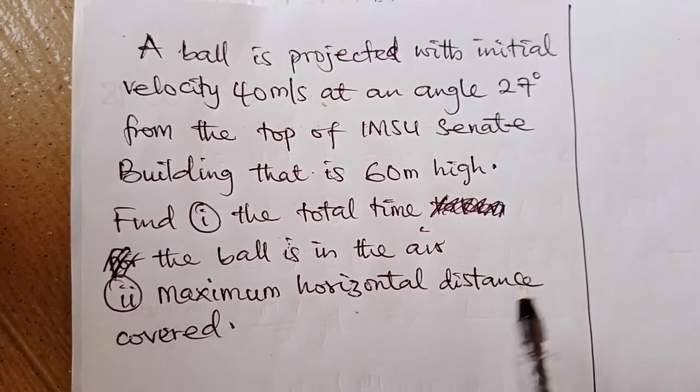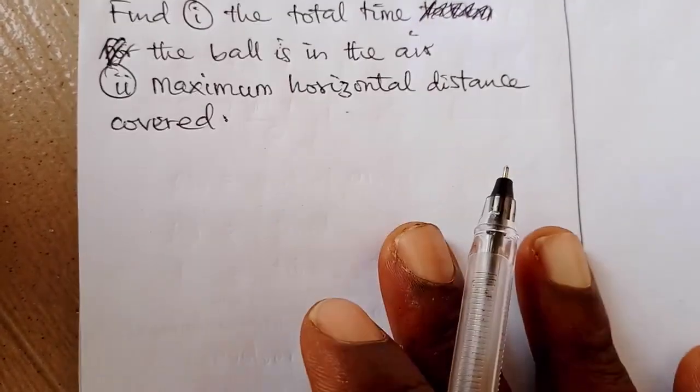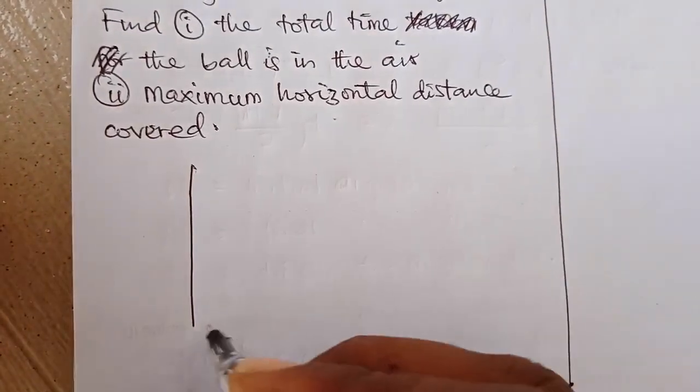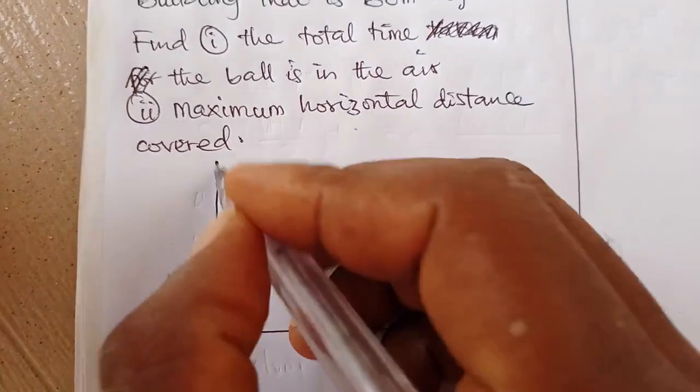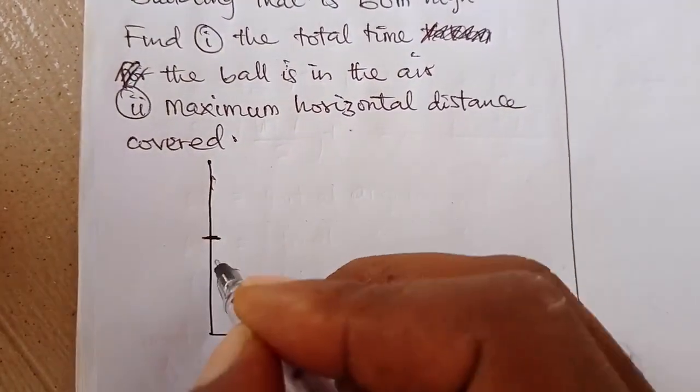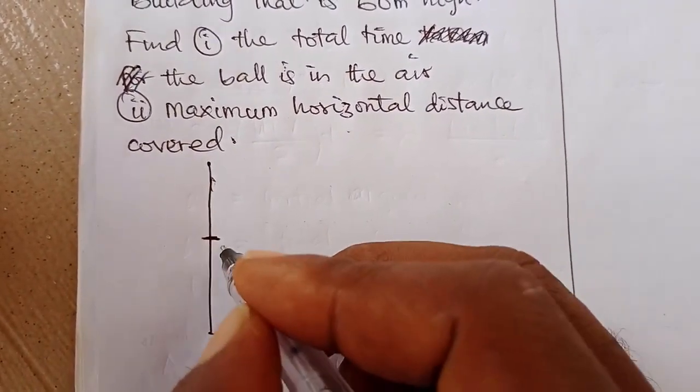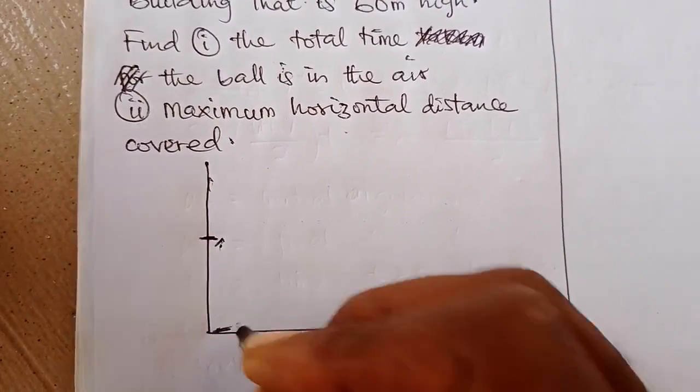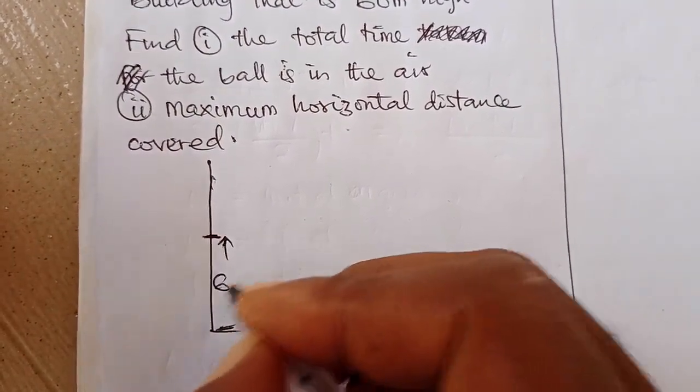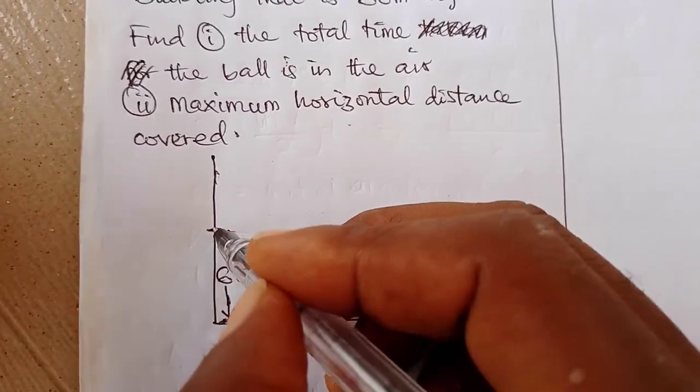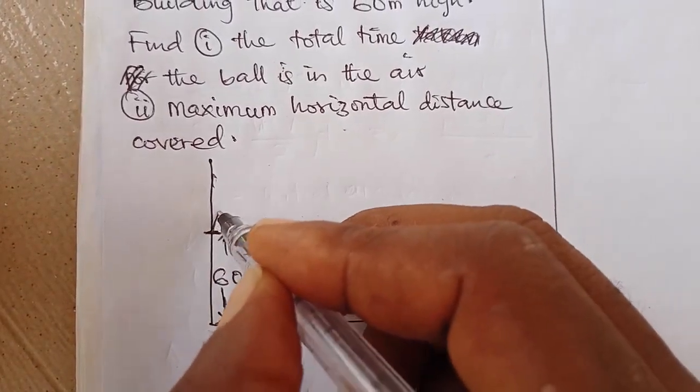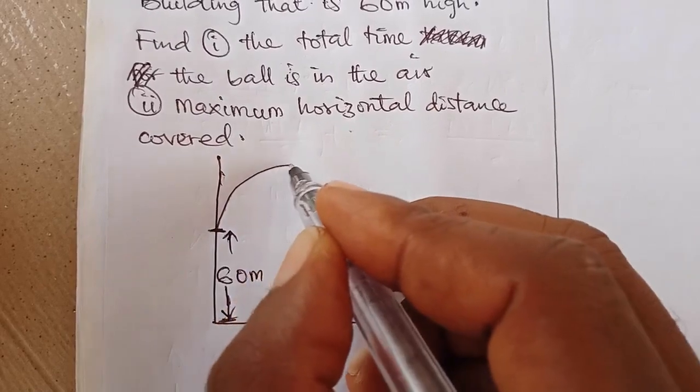Let's first make a sketch. If this is the y-axis and this is the x-axis, and let's say from on top of a building, this is where the building is. From the floor to this building is 60 meters high.